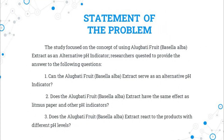The study focused on the concept of using alugbati fruit or Basella alba extract as an alternative pH indicator. Researchers were requested to provide answers to the following questions: 1. Can the alugbati fruit or Basella alba extract serve as an alternative pH indicator? 2. Does the alugbati fruit or Basella alba extract have the same effect as litmus paper and other pH indicators? 3. Does the alugbati fruit or Basella alba extract react to products with different pH levels?